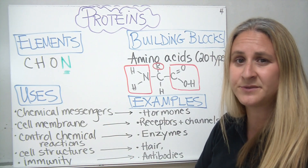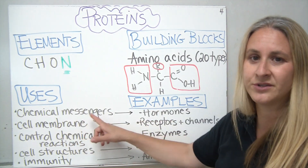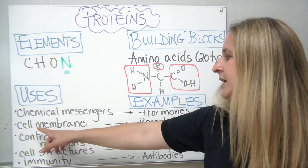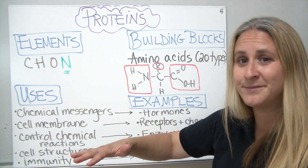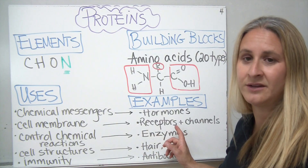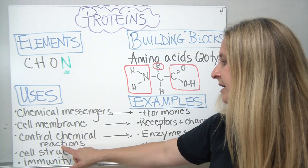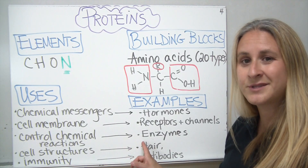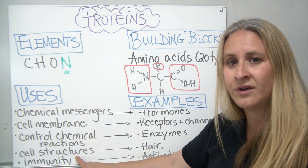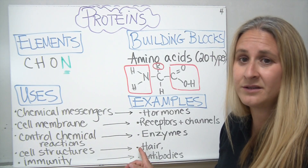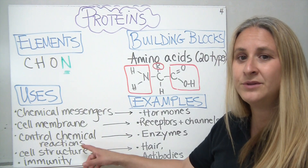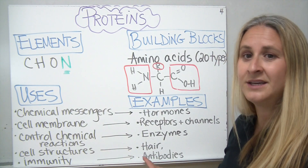The uses of proteins in the body or living organisms are quite varied. One use is as chemical messengers — for example, hormones. Another use is to make up the cell membrane, where proteins serve as receptors and transport channels to help things move in and out of the cell. Proteins also regulate chemical reactions — those compounds are called enzymes, which we'll discuss in detail later. Proteins also make up cell structures such as your hair, and they're used for immunity — antibodies, which fight off disease-causing organisms, are made of proteins.